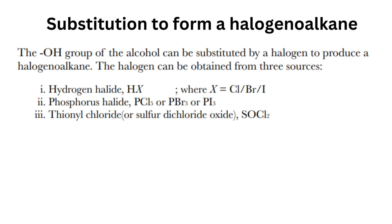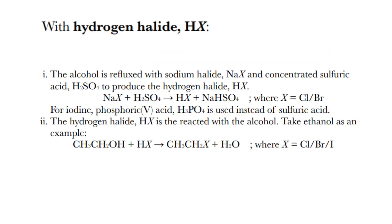Second reaction is substitution to form a halogenoalkane. The OH group of the alcohol can be substituted by a halogen to produce a halogenoalkane. The halogen can be obtained from three sources: hydrogen halide (HX), phosphorus halide (PCl5, PBr3, or PI3), or thionyl chloride (SOCl2). With hydrogen halide, the alcohol is refluxed with sodium halide and concentrated sulfuric acid to produce HX. The reaction is: NaX plus H2SO4 gives HX plus NaHSO4, where X can be chlorine or bromine. For iodine, phosphoric acid H3PO4 is used instead of sulfuric acid. The hydrogen halide is then reacted with the alcohol.